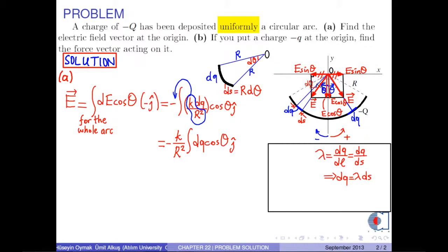Since charge negative capital Q has been deposited uniformly, then λ is also calculated by the formula total charge over total length.